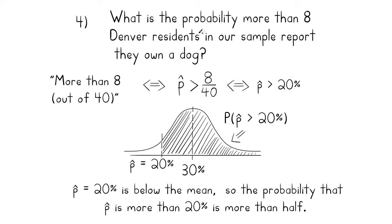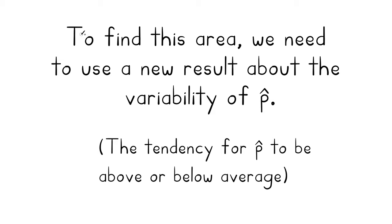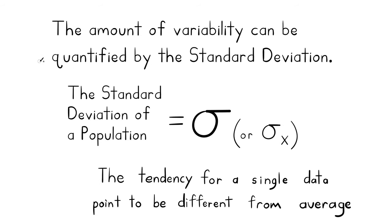What is the probability that more than 8 residents in our sample report they own a dog? More than 8 means P-hat more than 8/40 = 20 percent. Since 30 percent is the middle, 20 percent is to the left of the middle, so the area to the right of 20 percent is more than a half. But right now we don't have all the tools needed — we need the variability of P-hat: how much tendency is there for P-hat to be above or below average?